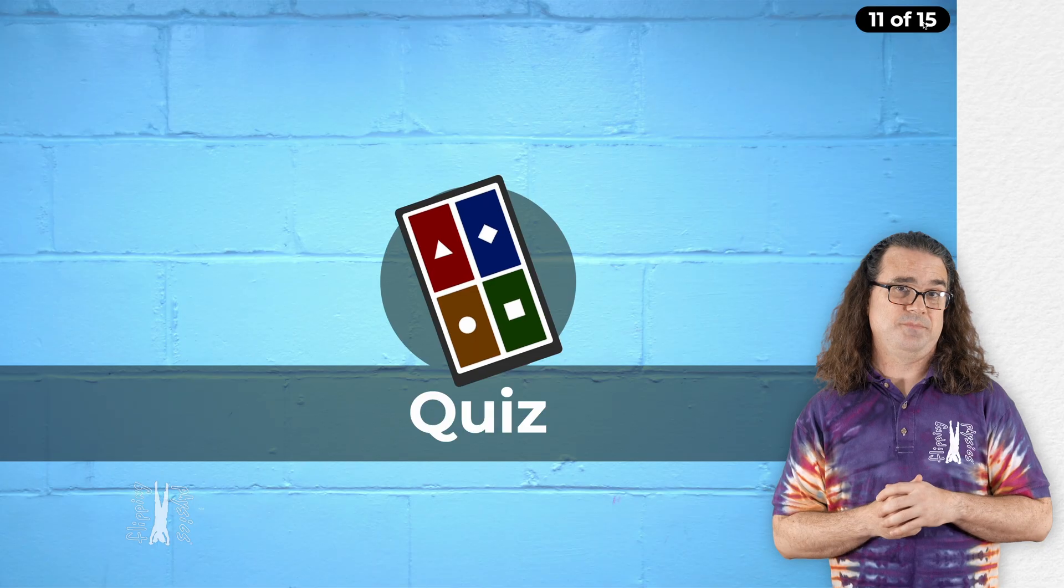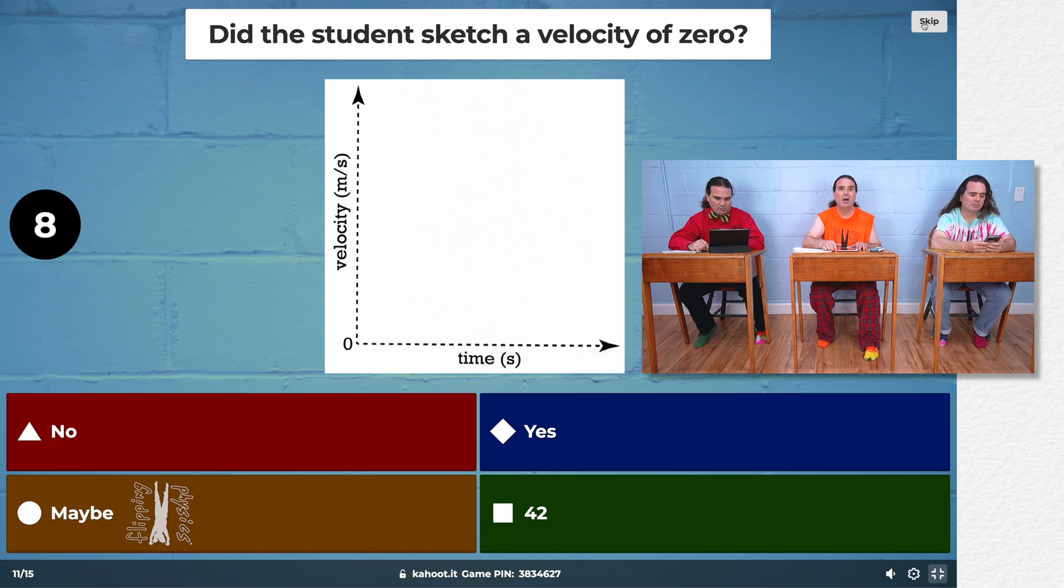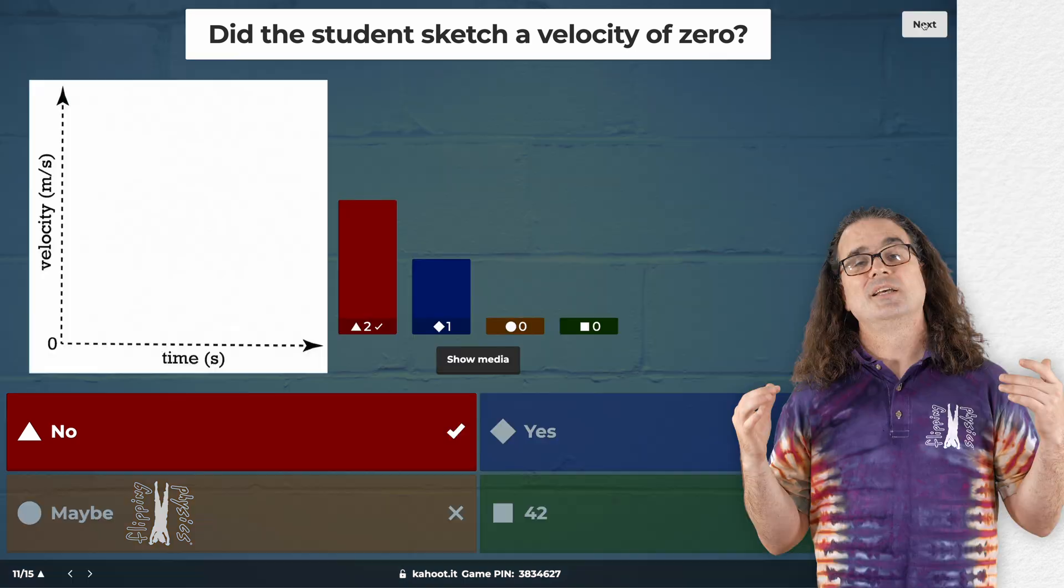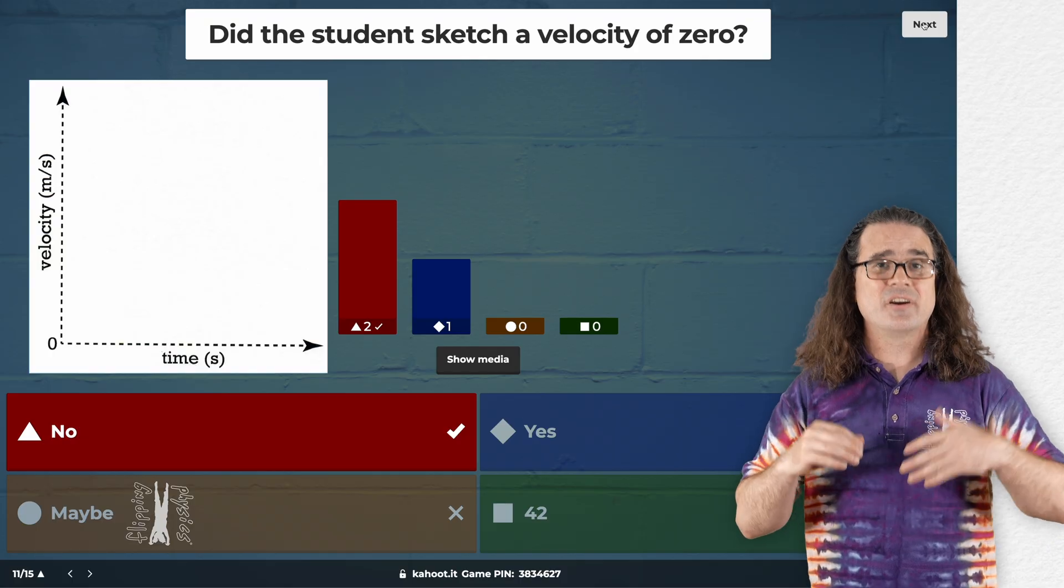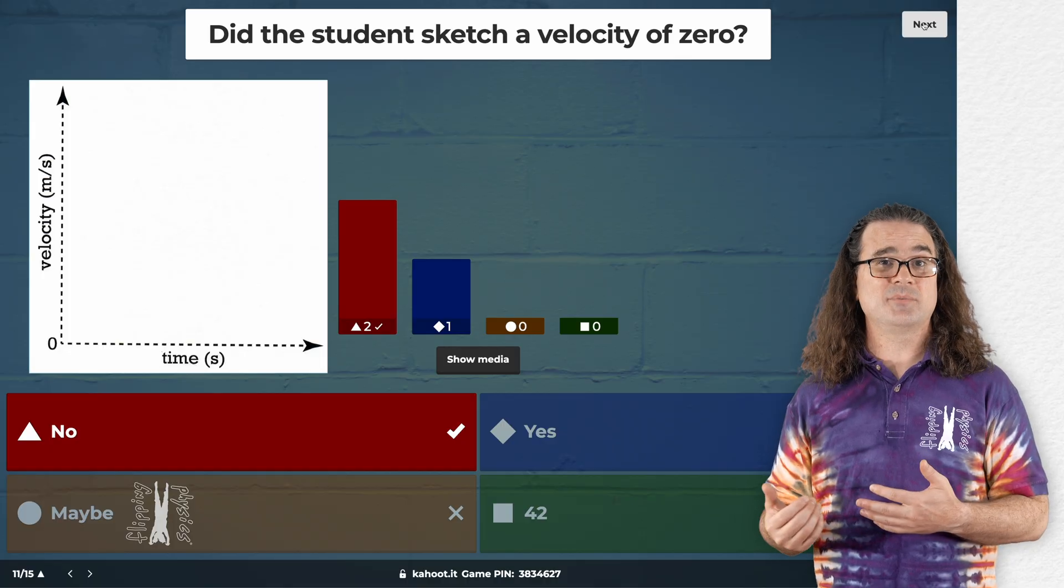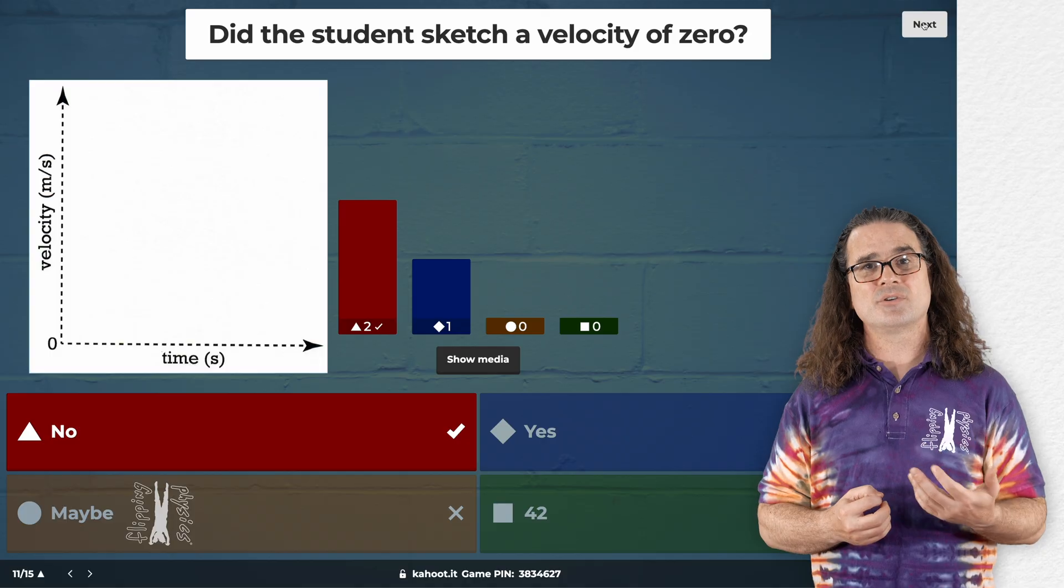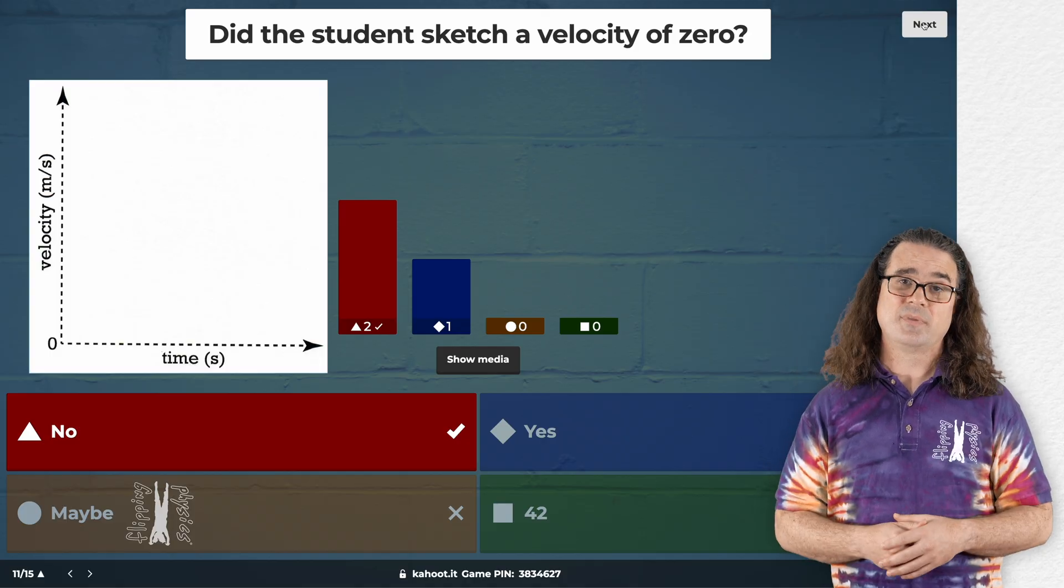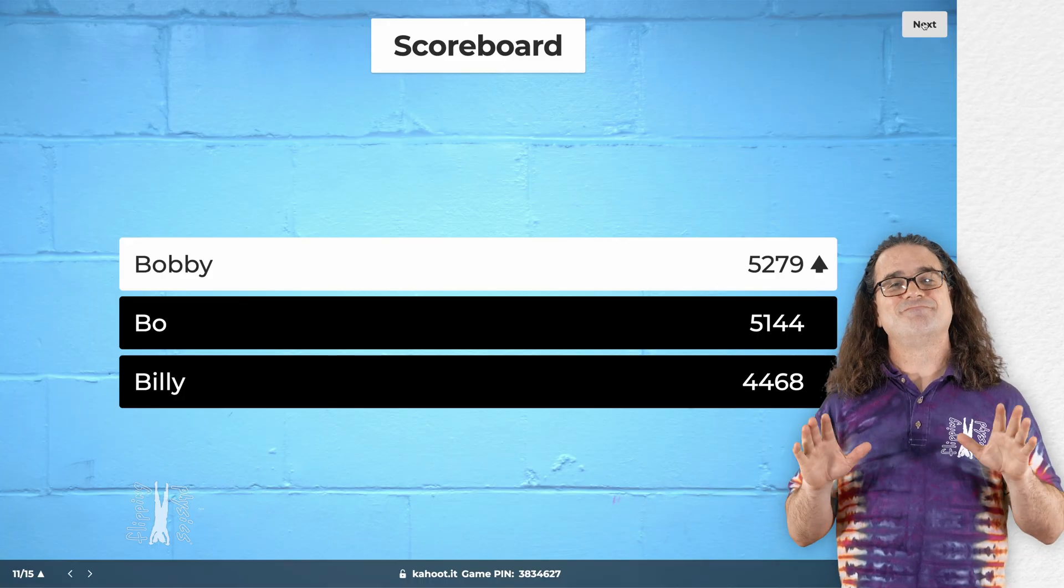And it looks like Bo is still in the lead. Okay. Now, a new question. Did the student sketch a velocity of zero? No, they did not. Again, you have to sketch your answer, even if that answer is zero. This is why the axes on the answer graphs on the AP exams are dashed lines. To make it so the reader can better see when you have drawn a horizontal line with a value of zero. And now Bobby is in the lead. Well done. Thanks.